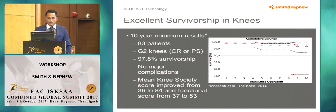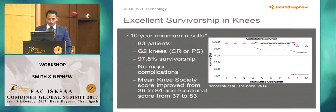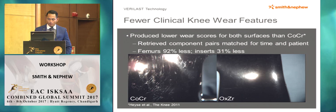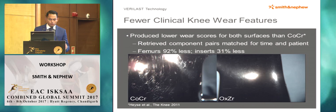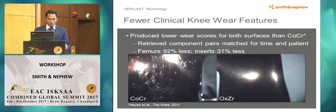In terms of survivorship within knees with 10-year minimum results, here's a study of 83 patients of the Genesis 2 knee, whether CR or PS, with almost 98% survivorship, no major complications, and improvement of mean knee society scores. Fewer clinical wear features — this produced lower wear scores for both surfaces than cobalt chromium. Retrieved components repaired and matched for time and patient: the femurs had 92% less clinical wear compared to cobalt chrome, and inserts were 31% less.